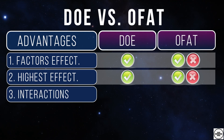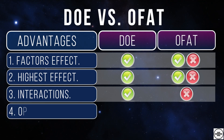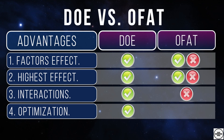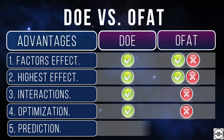Interaction between the factors: unfortunately we can't get this by one factor at a time. Process optimization: this isn't possible by using the classic method either. Prediction: we can't have a prediction with the classic way.